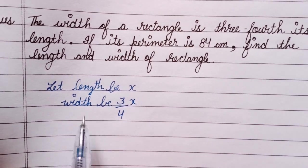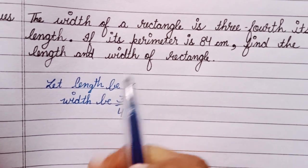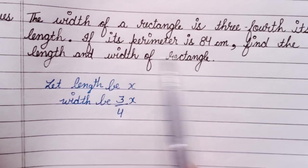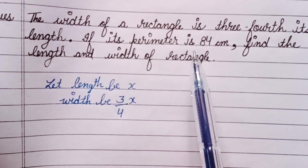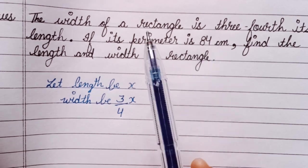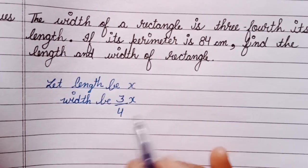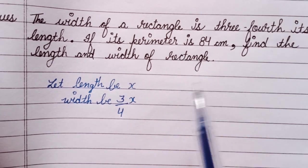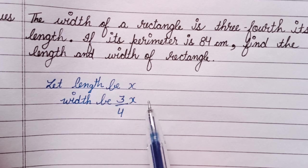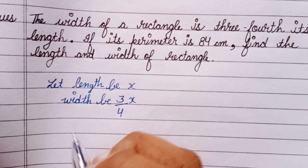Another thing which is given is if its perimeter is 84 cm, it means the perimeter of rectangle is given. We know the formula of perimeter, so with the help of that formula we can find the value of x. So put the formula.